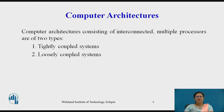We will see the details of the computer architecture. The net result of the advancements in the price-performance ratio has now changed to the use of interconnected multiple processors in place of a single high-speed processor. The computer architecture consisting of interconnected multiple processors is of two types: tightly coupled systems and loosely coupled systems.